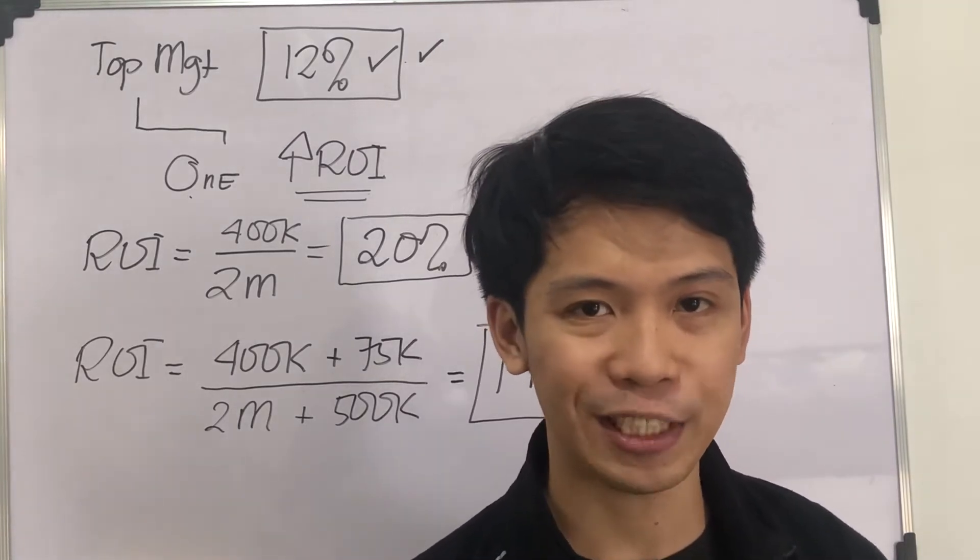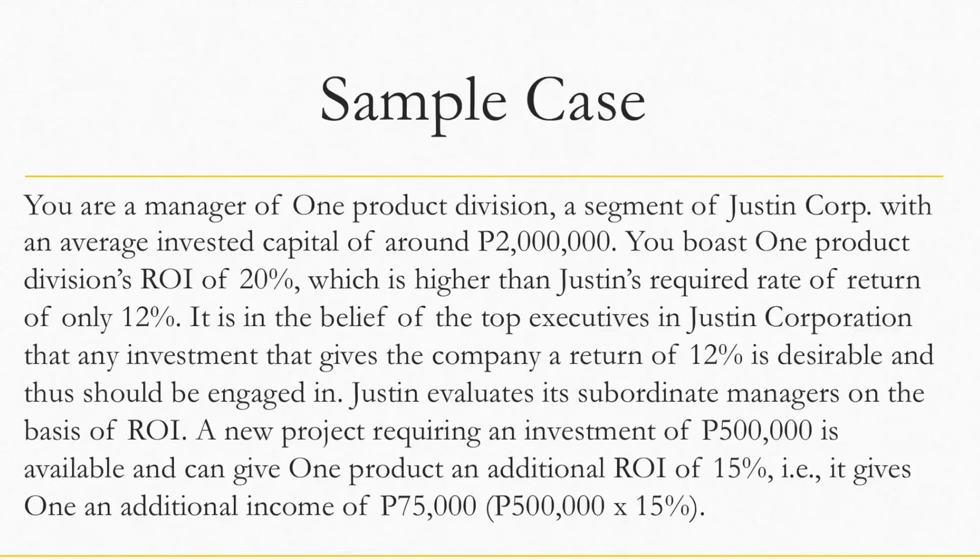Let's go back to the case we discussed in the last video. You are a manager of One Product Division, a segment of Justine Corp., with an average invested capital of around $2 million. You boast One Product Division's ROI of 20%, which is higher than Justine's required rate of return of only 12%.